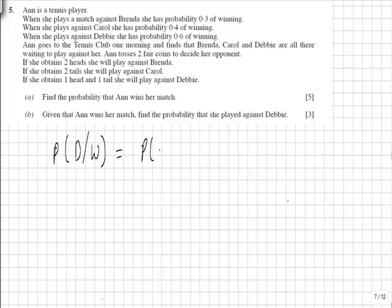Putting it into our conditional probability formula, we've got Debbie and wins over the probability of a win overall. Now if you remember in the previous question, we calculated the probability of a win to be 0.475.